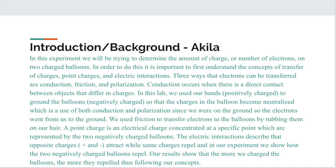Conduction occurs when there's a direct contact between objects that differ in charges. In this lab, we used our positively charged hands to ground the balloons that were negatively charged, so the charges in the balloons become neutralized, which is a use of both conduction and polarization. We used friction to transfer electrons to the balloons by rubbing them on our hair. A point charge is an electric charge concentrated at a specific point, which are represented by two negatively charged balloons.